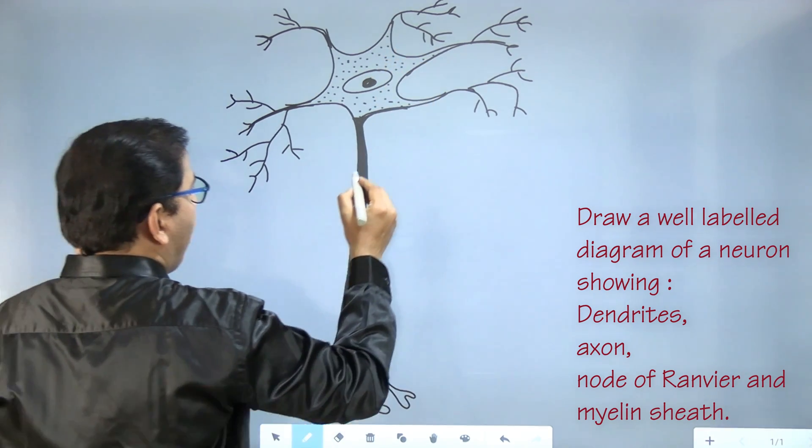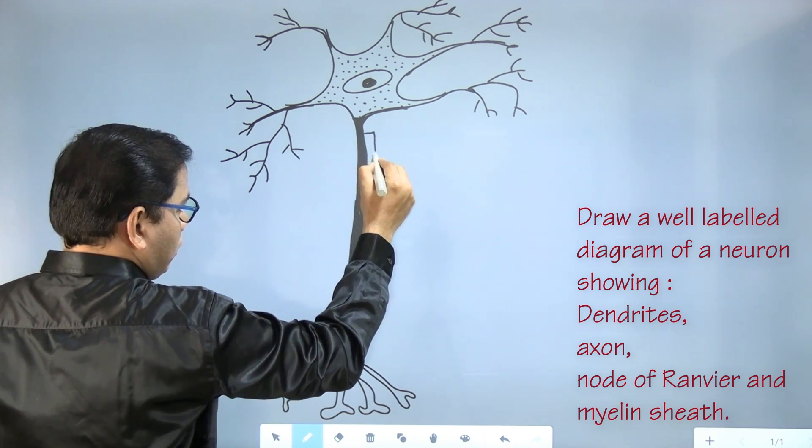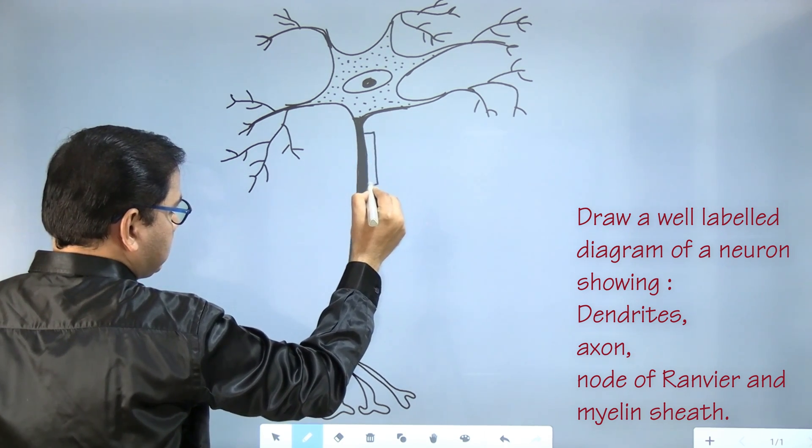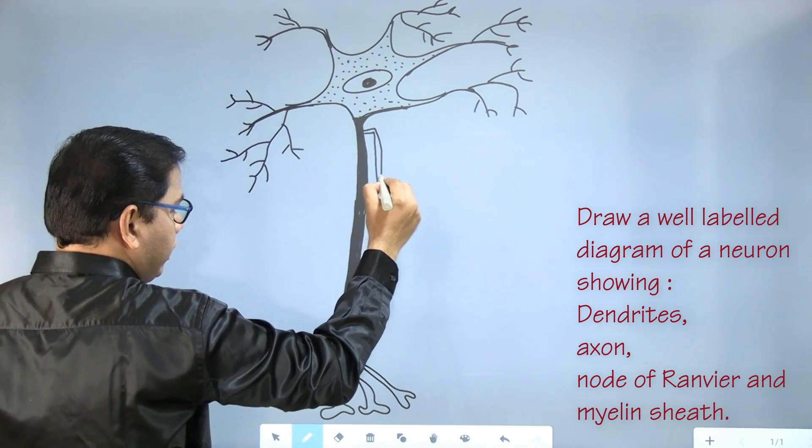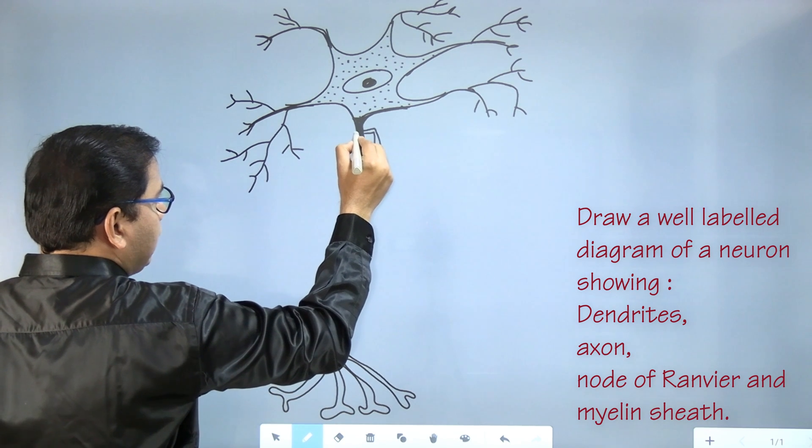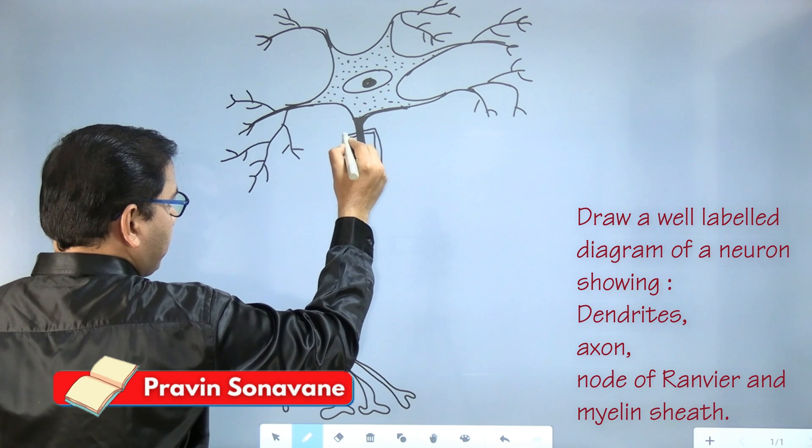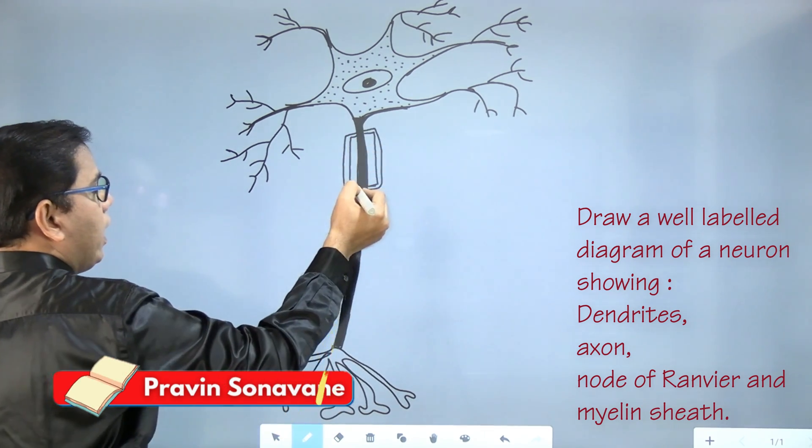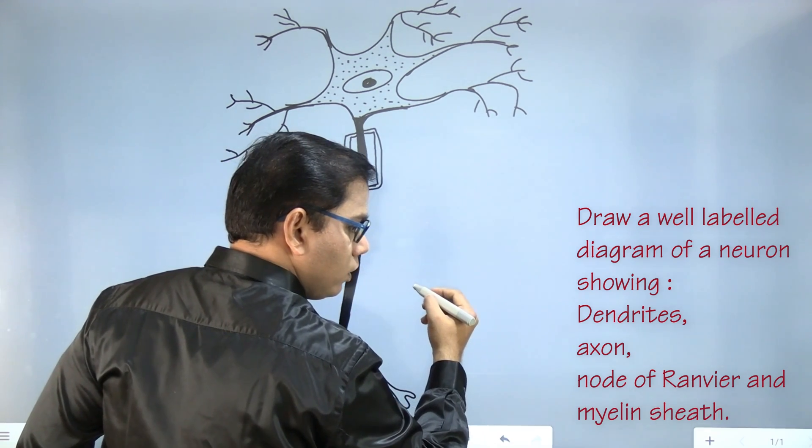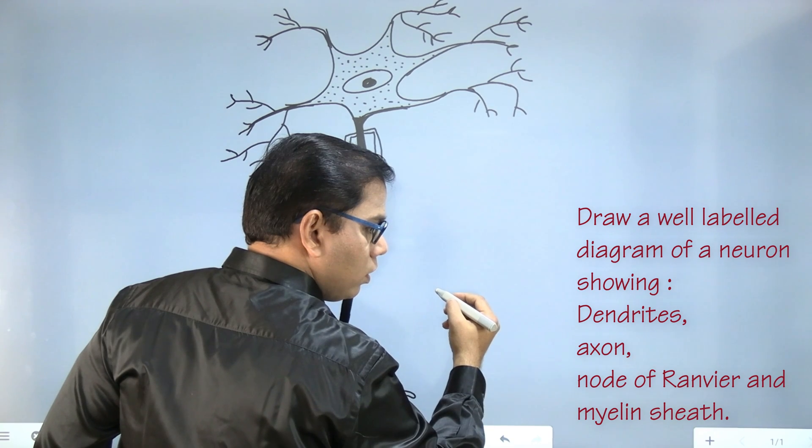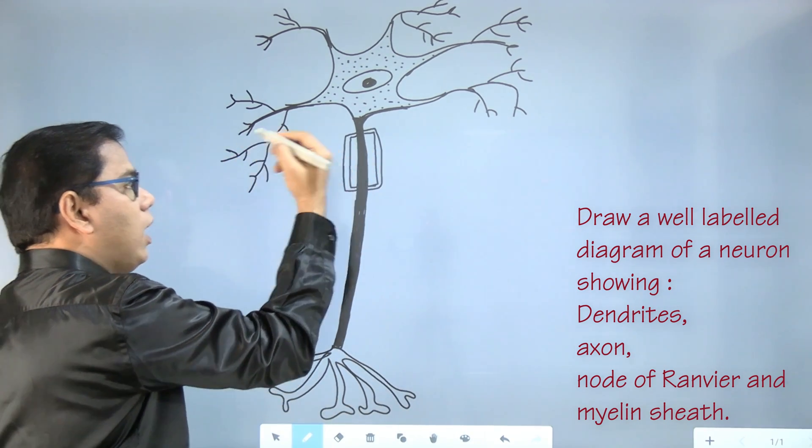Now we will draw myelin sheath. Be careful how we are going to draw myelin sheath. So one box like this, a rectangular kind of box and over that another layer. When you draw this myelin sheath, please make sure that you are drawing two layers because the outer layer is the neurolema.